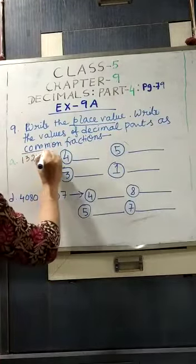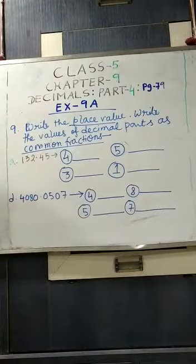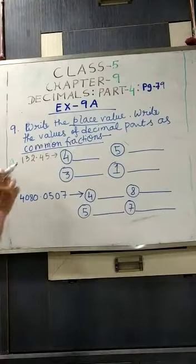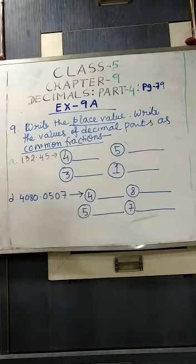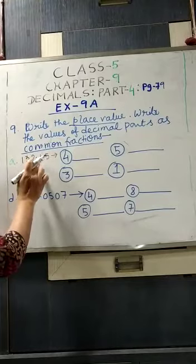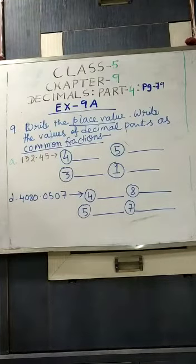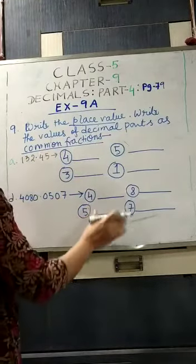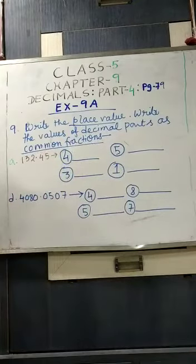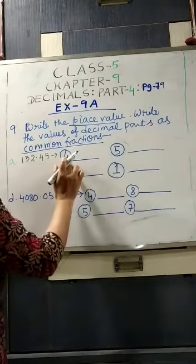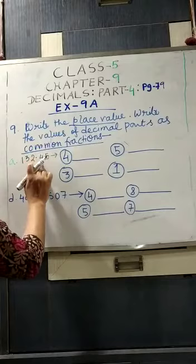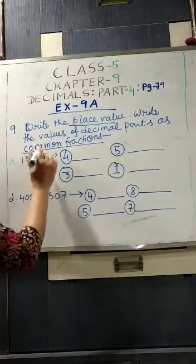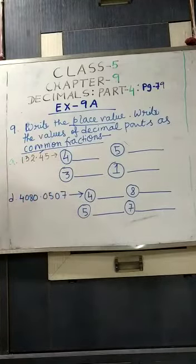So 9A, I have written sum number 9A: 132.45. Here you can see the digits are given whose place value you have to write. The first digit is 4. After the decimal, 4 is in first position, that means tenths place, so we will write 4 by 10.